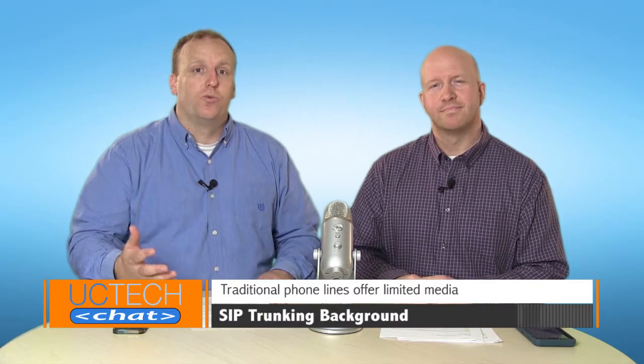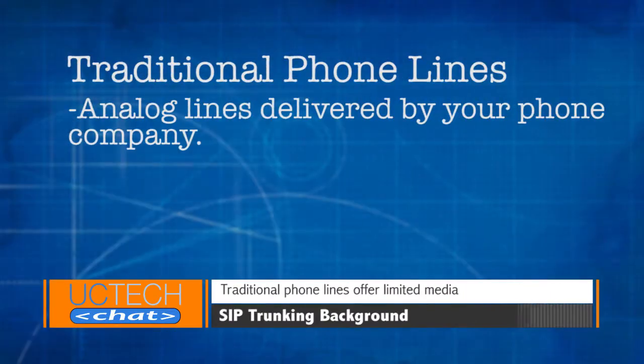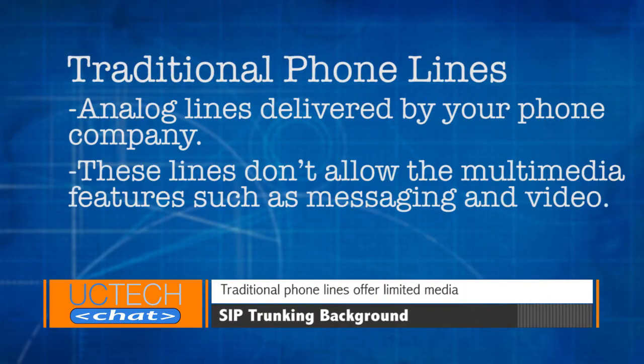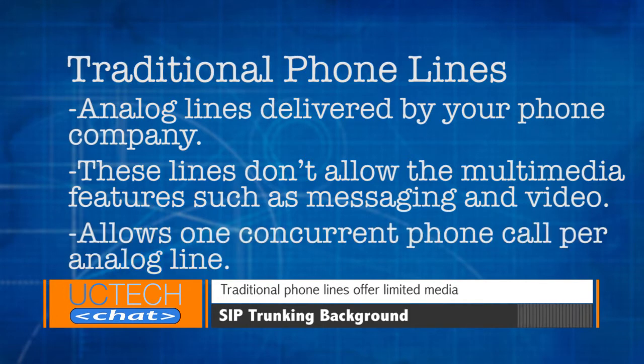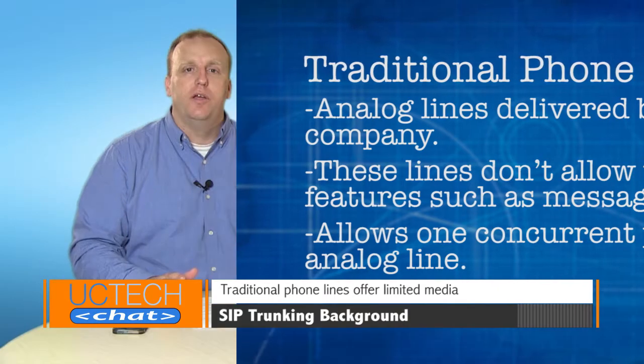So first, a little background on SIP Trunking. SIP Trunking is not about cocktails and tailgating. So traditional phone lines, or analog lines, were traditionally delivered by your phone company. And those were great for voice, but they didn't do video at all. They didn't do any messaging or any other type of multimedia. And they were limited to one concurrent call per line, so very limiting.